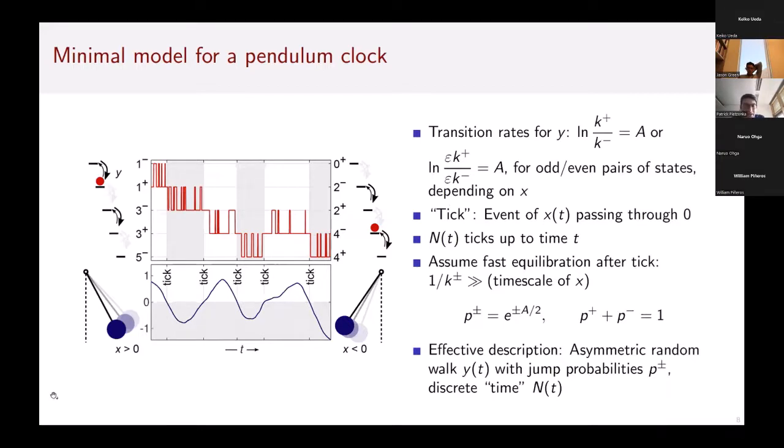I define a tick as the event of x(t), that oscillator, passing through zero. By n(t) I define the process that counts the number of ticks up to a time t. I also assume these rates k+ and k- are very large such that I have fast equilibration after a tick compared to the time scale for the pendulum to swing. Under that assumption I have a very simple Boltzmann distribution after a tick, with probability of being in the upper or lower state given by that normalized Boltzmann distribution depending on the affinity.